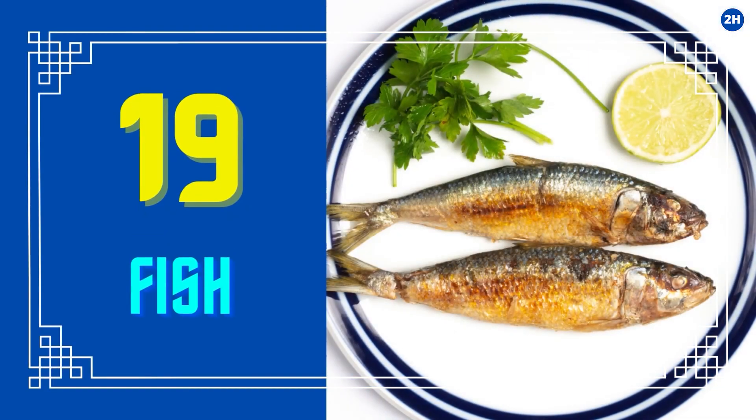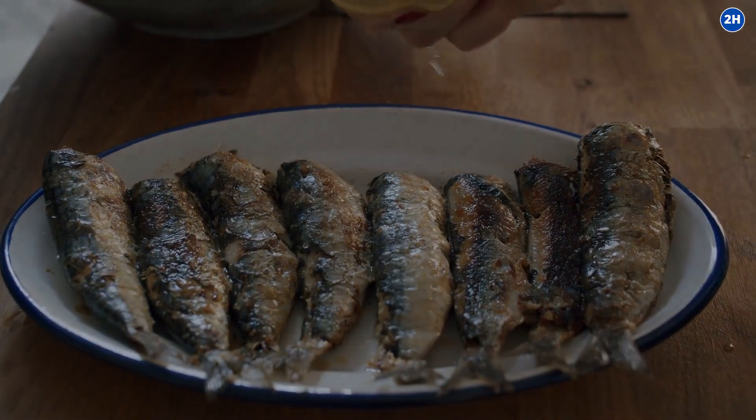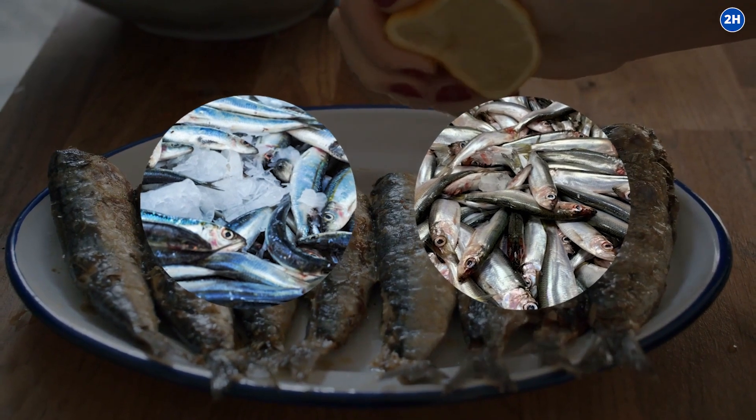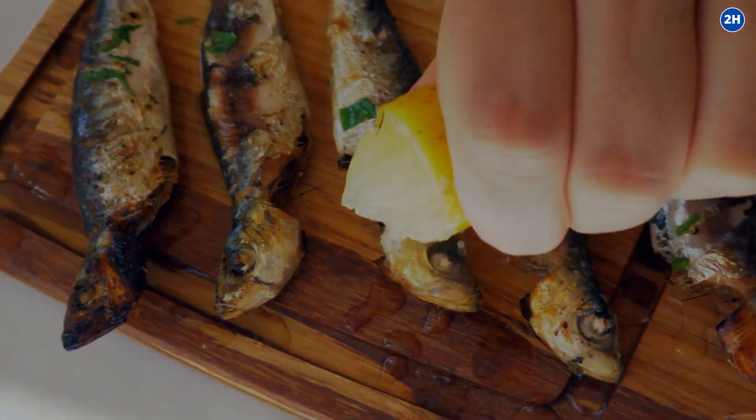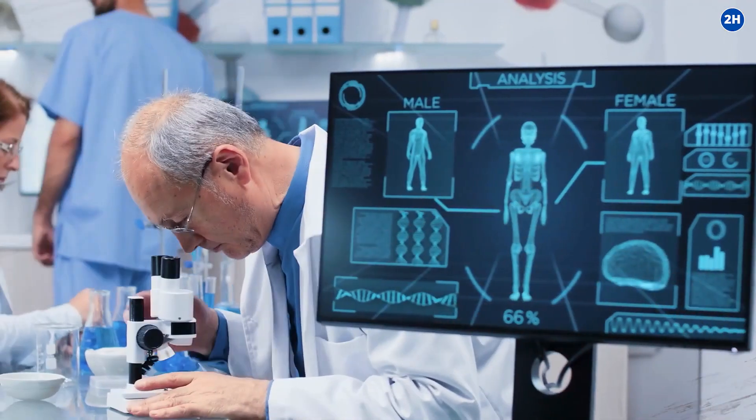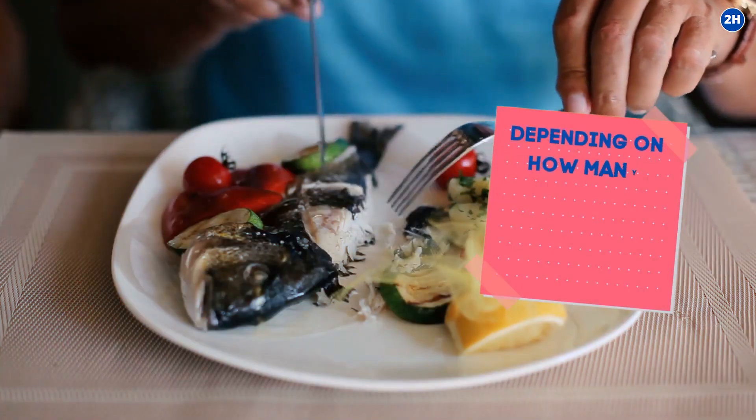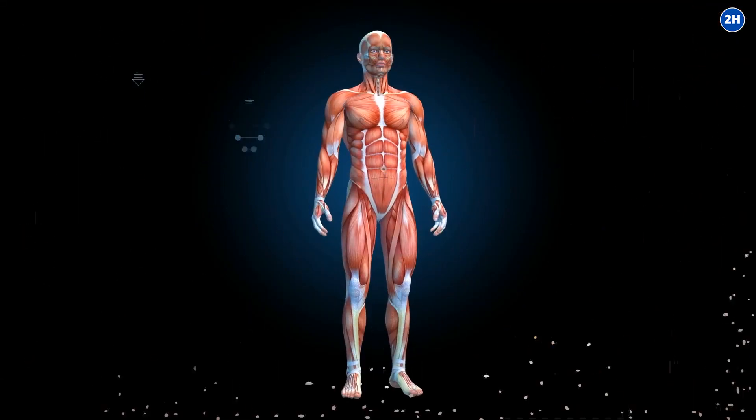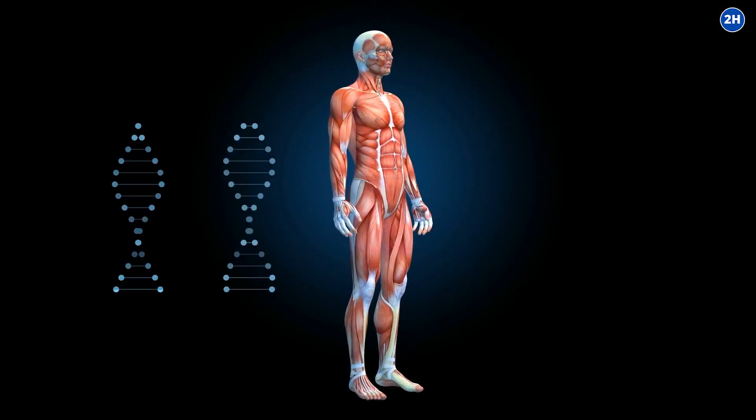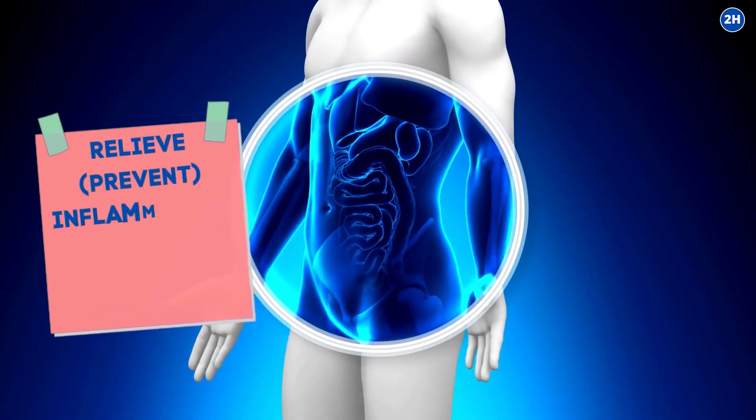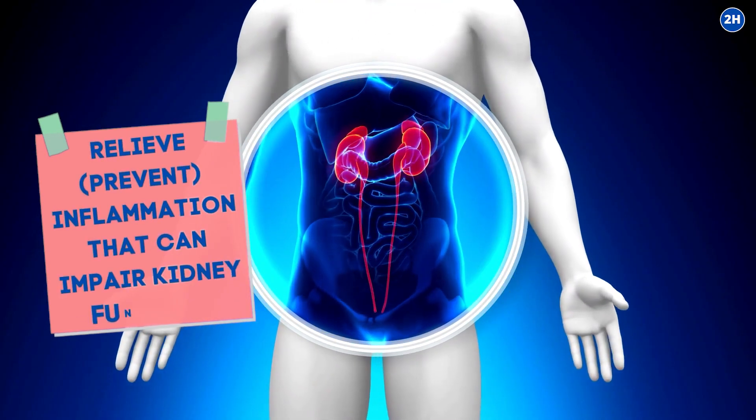19. Fish. Eating small fish, such as sardines and anchovies, which are relatively free of environmental contaminants, can be very helpful to your kidneys. Researchers have linked the ability of the kidneys to cleanse, depending on how many omega-3 fatty acids people consume. The body needs the fats in fish to produce compounds called resolvins that relieve, prevent inflammation that can impair kidney function.